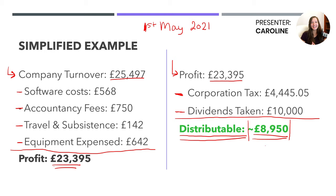That's essentially how it works — a very broken-down, simple calculation. It doesn't always work out this way in reality. For example, if the distributable figure was a negative £8,900, it means your company definitely doesn't have any money left to pay you a dividend. So you can't legitimately issue any dividends — I'll get into why in a minute.